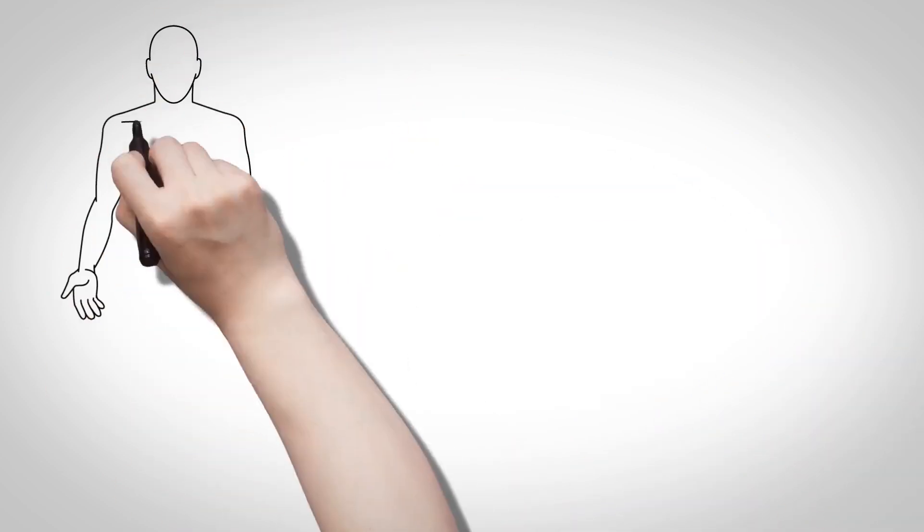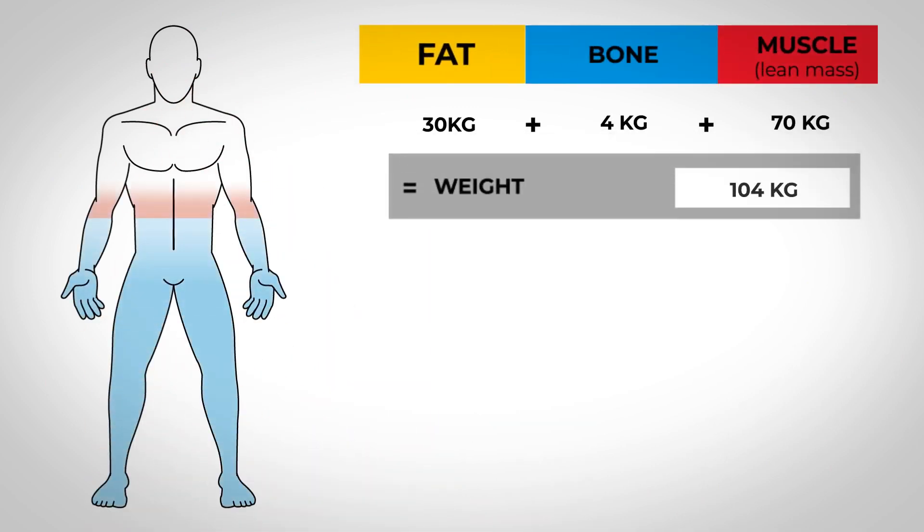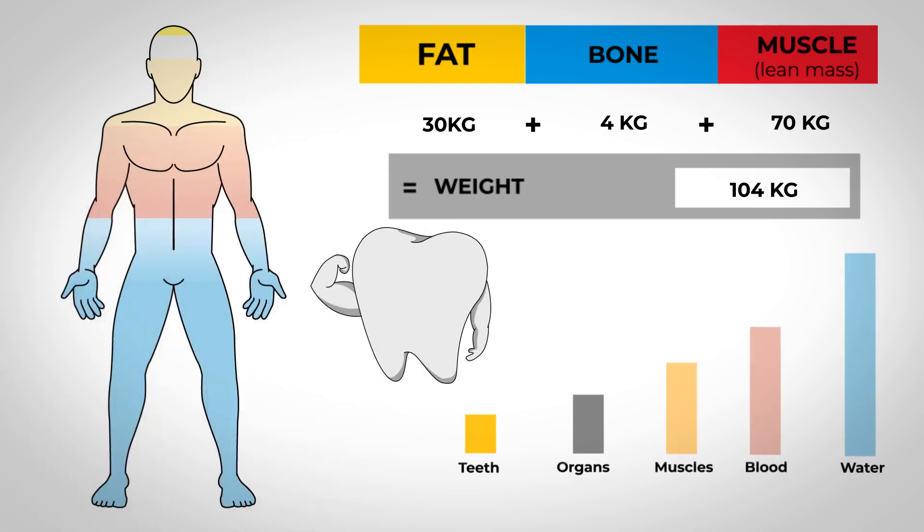Your body weight is actually the sum of your fat mass, bone mass and lean mass. This includes your muscles, organs, blood, water content, even your teeth.